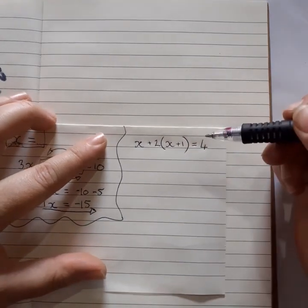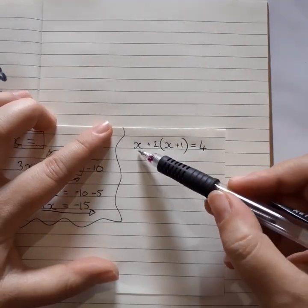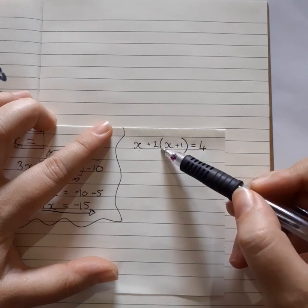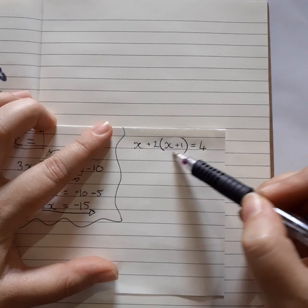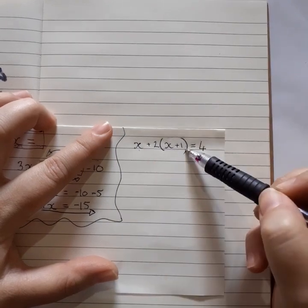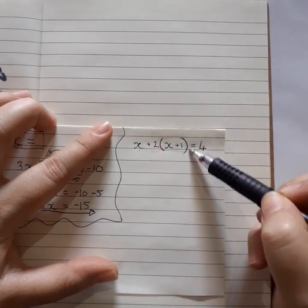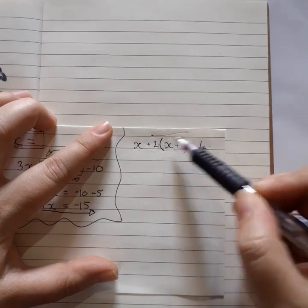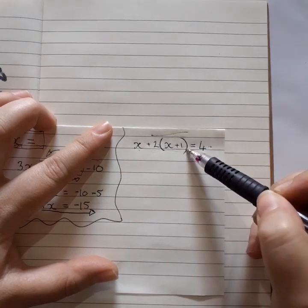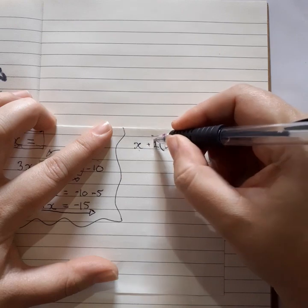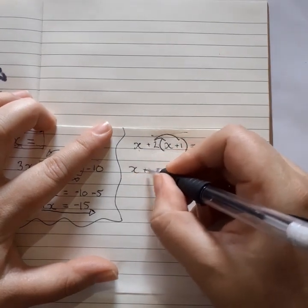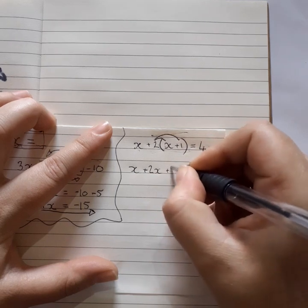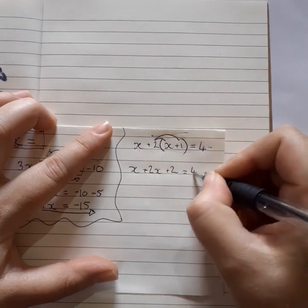Alright. So, what do we need to do now? We want to get the x by itself. But here the x is in brackets. So we must first deal with this brackets before we can get all the x's by itself. Because this is one term. We can't move it as it is, because then we're still going to be left over with brackets. So first we do distributive law times it in the brackets. And we've got x plus 2x plus 2 equals 4.